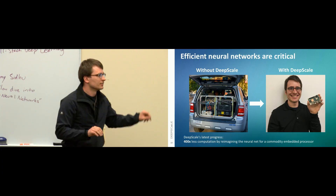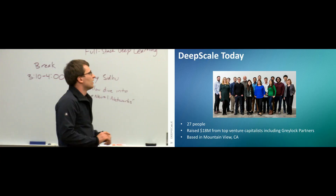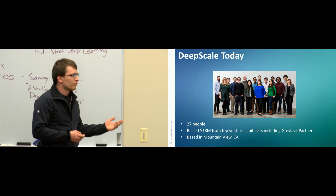To summarize DeepScale today: we have about 27 people. We've raised exactly $18 million from some of the top VCs in Silicon Valley. We're based in Mountain View. And like certain performers like to say, I have just one more thing: that's all cool, but where do I start?